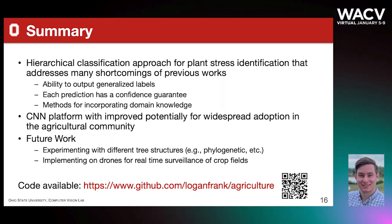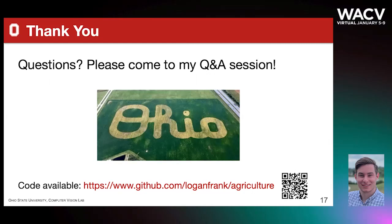In summary, we applied a hierarchical approach novel to the area of plant stress identification. This approach addresses many previous issues by being able to output generalized labels, associating each prediction with a confidence guarantee, and enabling different avenues for incorporating domain knowledge. For future work, we aim to experiment with different tree structures and implement this algorithm on drones for real-time surveillance of crop fields. Thank you, and if you have any questions, please come to my Q&A session.